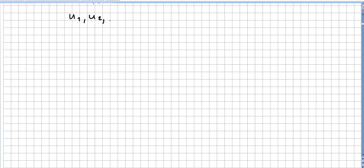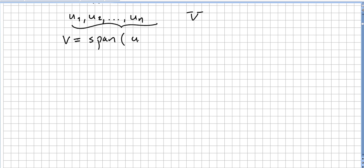We say that the vectors u1, u2, ..., un are set to span or generate V. So these vectors u1, u2, ..., un — they generate V, or we say they form a spanning set of V, if V is equal to the span of u1, ..., un.